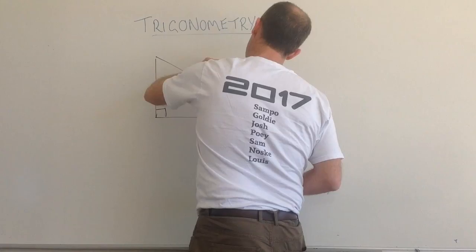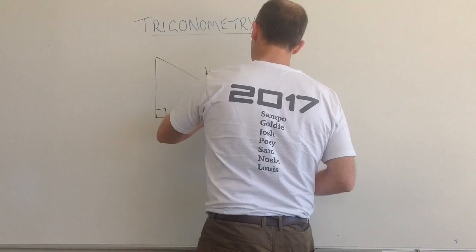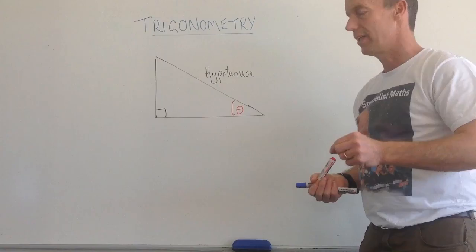And we always know from our work with Pythagoras' Theorem that this longer side is called the hypotenuse. And that's always opposite the right angle. So it's the longer side in a right angle triangle opposite the right angle.